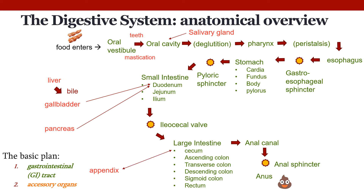The last accessory organ is the appendix, which is a lymphoid organ. How it aids in digestion is not completely clear, since you can have it removed with no apparent ill effects. However, we think it may act as a storehouse for beneficial bacteria, periodically injecting them into the large intestine to maintain a healthy bacterial population, which aids in proper digestion.